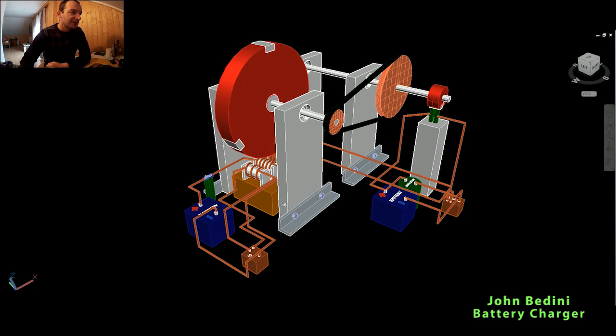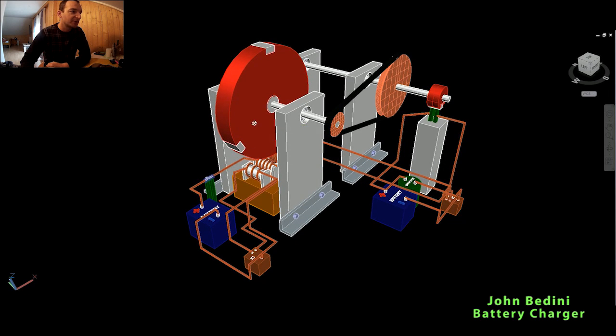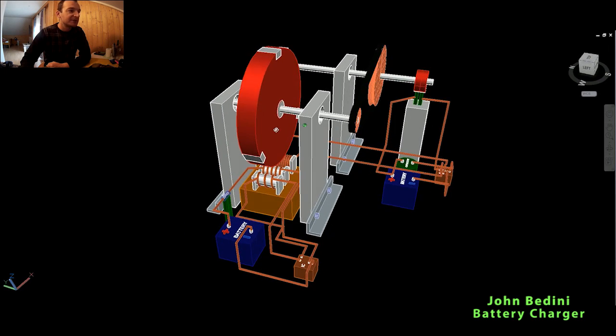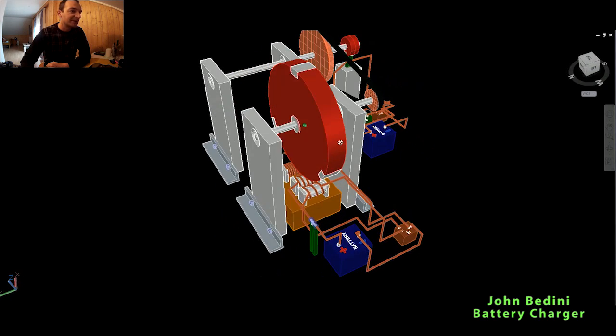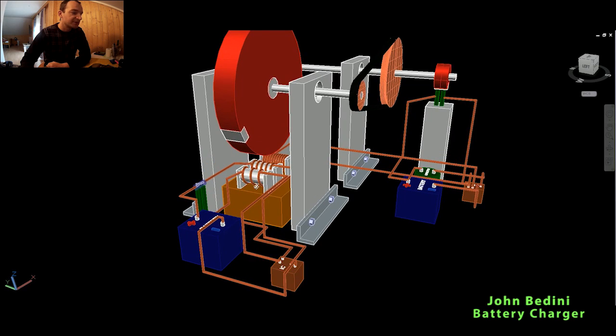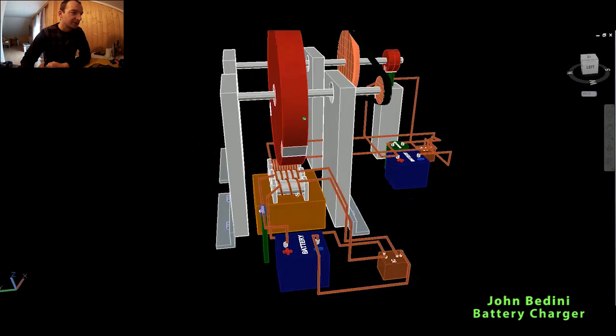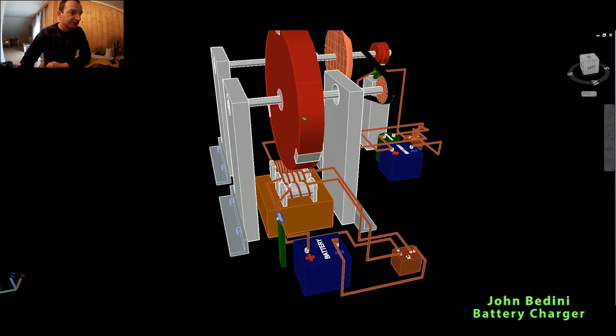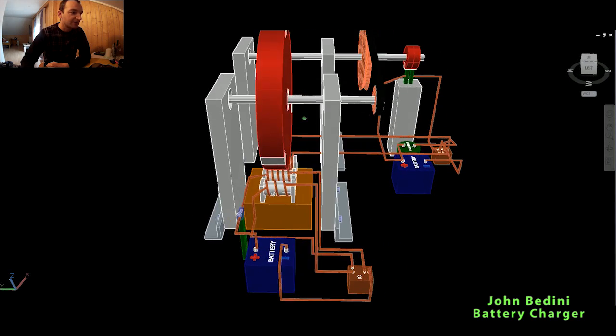You can see we have one big flywheel, this red part here. On this flywheel there are three magnets. Beneath the flywheel is a set of three coils: the primary coil in the middle, the trigger coil in front, and...